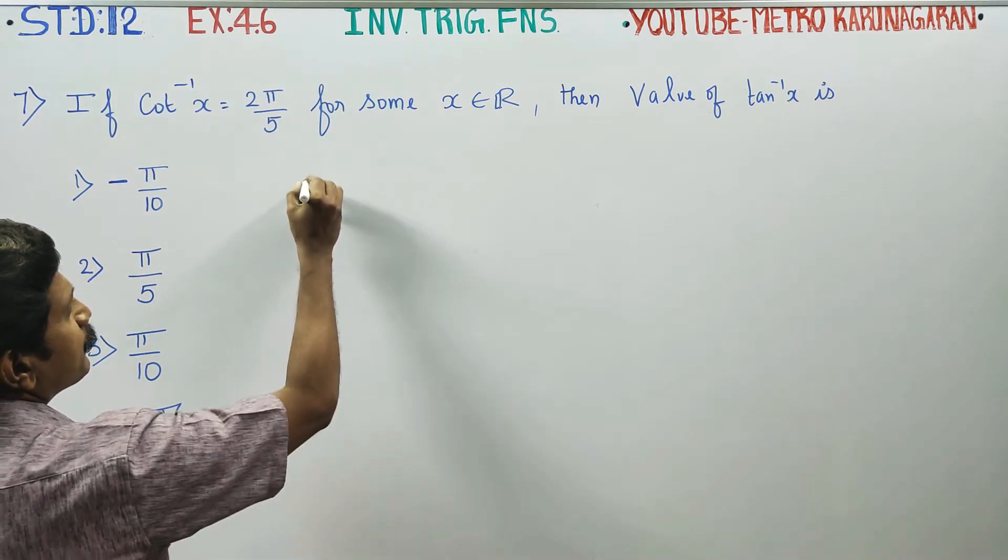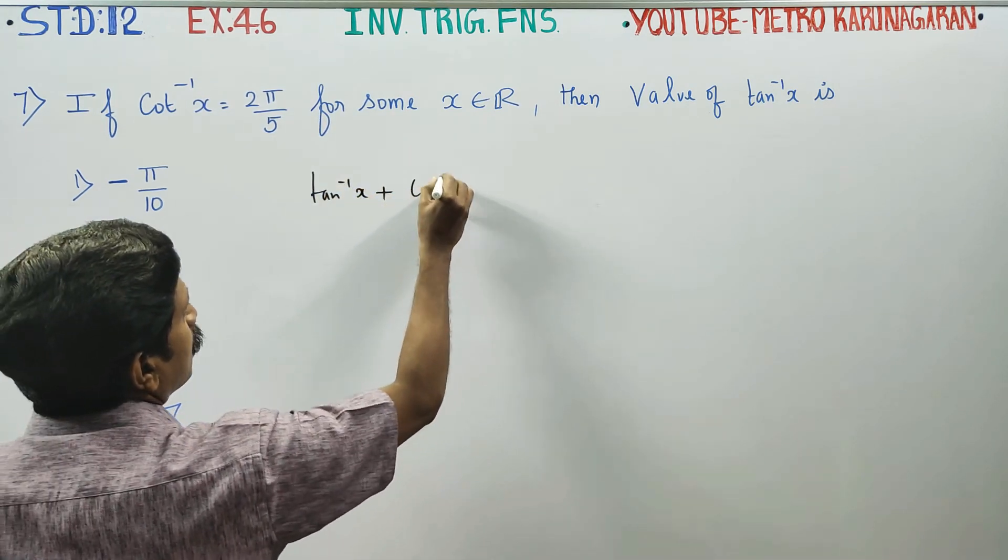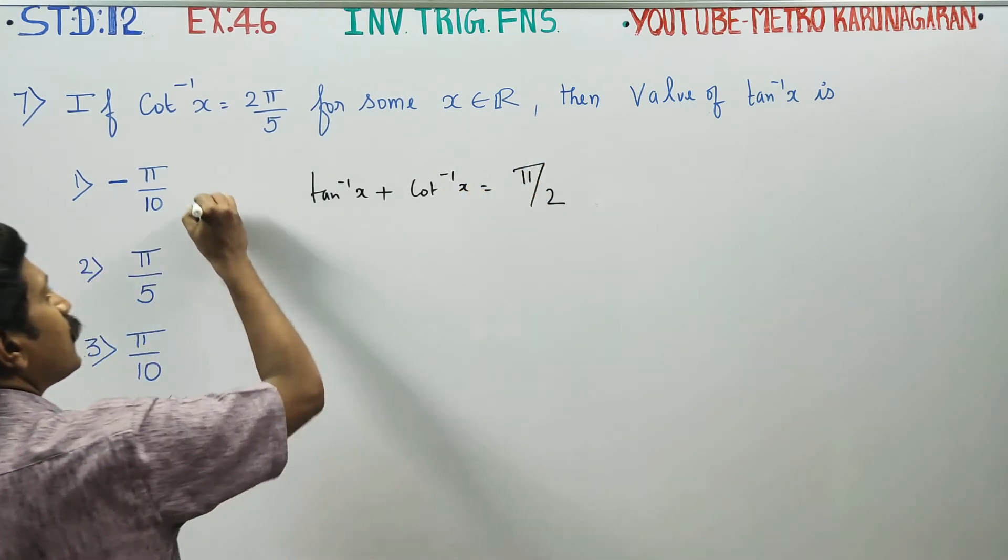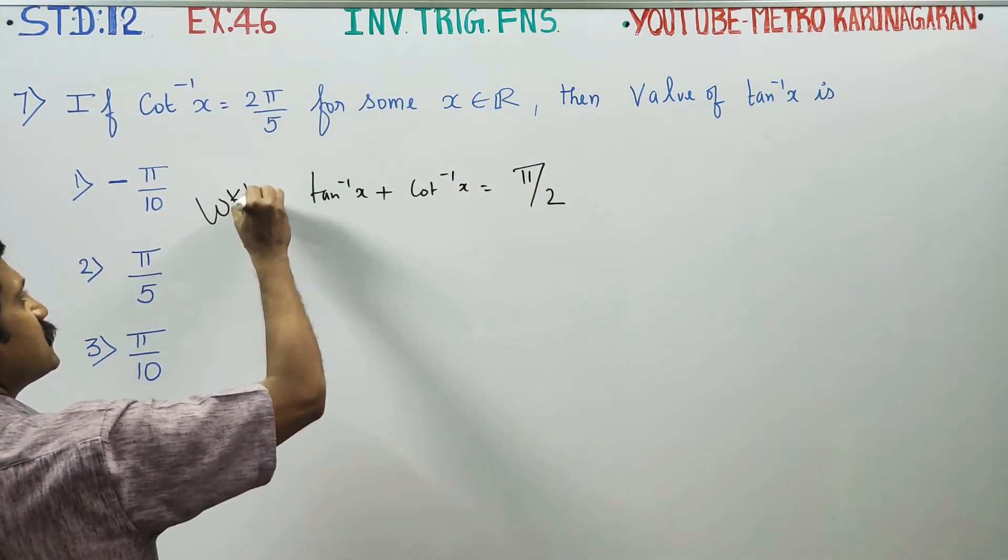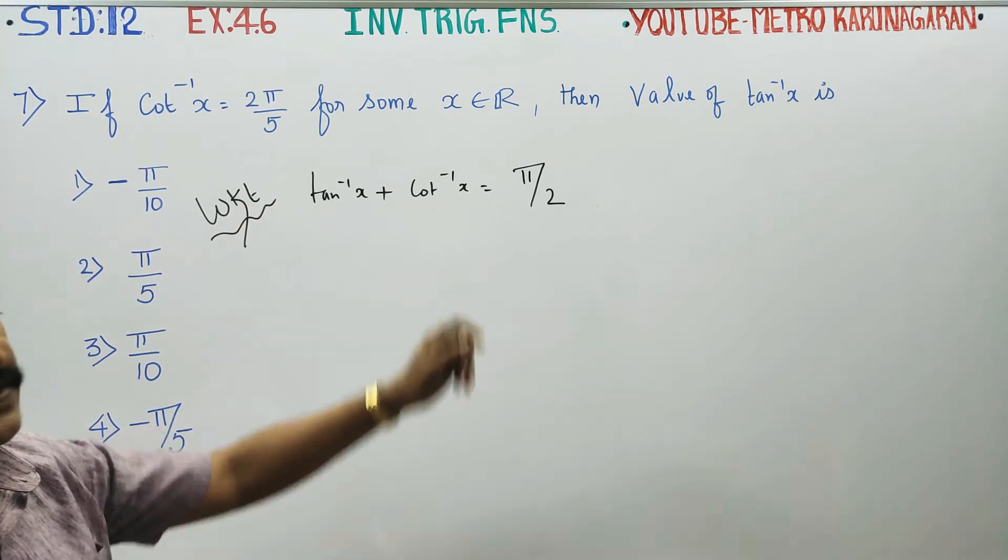First of all, tan inverse of X plus cot inverse of X is equal to 90 degrees. This is a ready-made formula. We know that. Tan inverse of X plus cot inverse of X is equal to π/2.